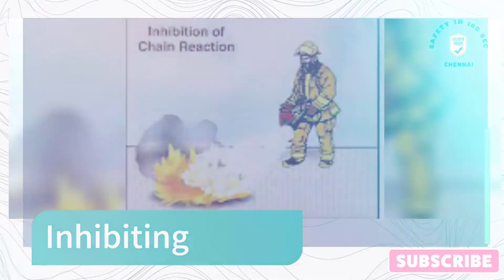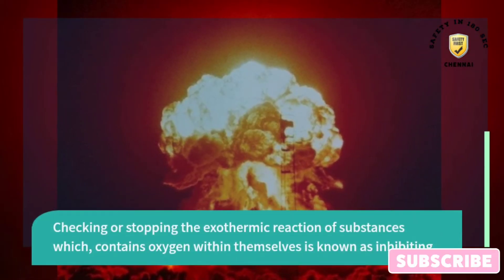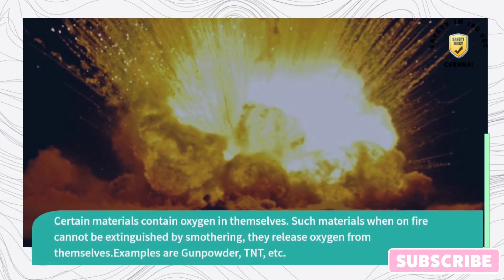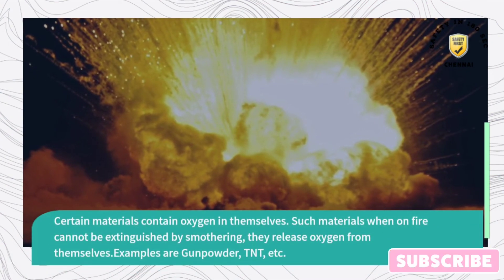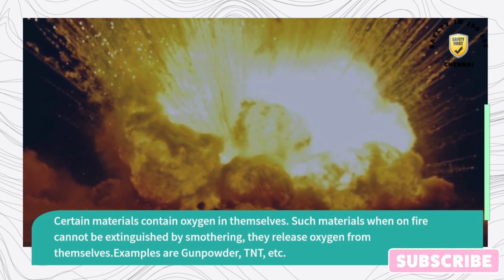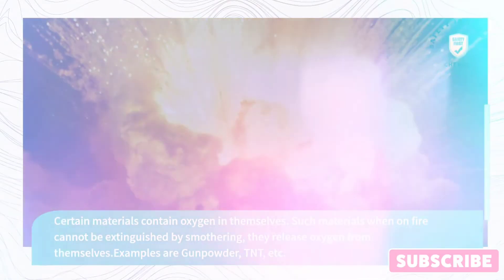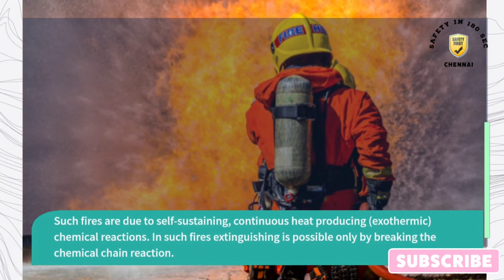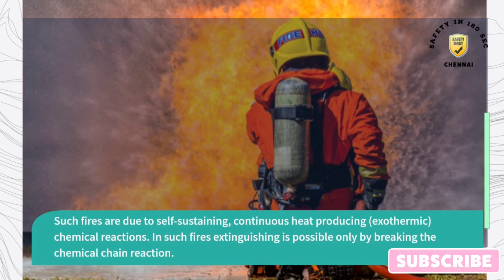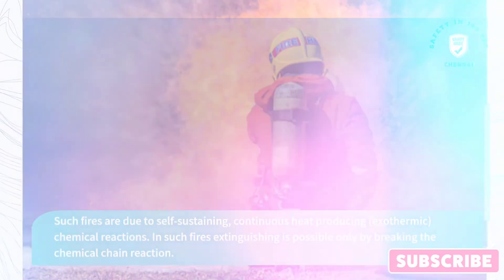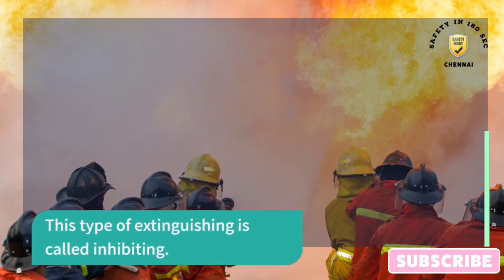Inhibiting. Checking or stopping the exothermic reaction of substances which contain oxygen within themselves is known as inhibiting. Certain materials contain oxygen in themselves. Such materials when on fire cannot be extinguished by smothering, as they release oxygen from themselves. Examples are gunpowder, TNT, etc. Such fires are due to self-sustaining, continuous heat-producing, exothermic chemical reactions. In such fires, extinguishing is possible only by breaking the chemical chain reaction. This type of extinguishing is called inhibiting.